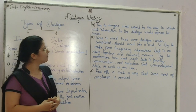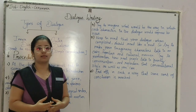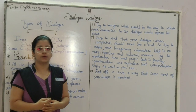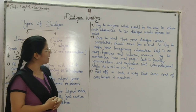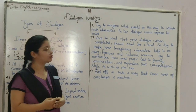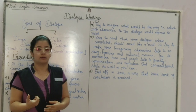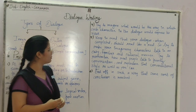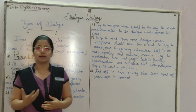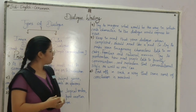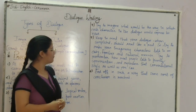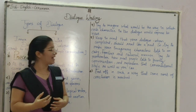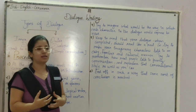Number four: try to imagine what would be the way in which each character in the dialogue would express their views. Number five: keep in mind that your dialogue when completed should read like real. Try to make your imaginary characters talk in an easy, familiar and natural manner. Try to remember how real people talk in friendly conversation and reproduce that conversation style as well as you can.